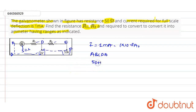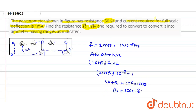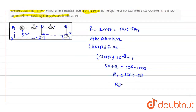Applying KVL in the first loop: (50 + R1) × i = 1. Substituting i = 10⁻³, we get (50 + R1) × 10⁻³ = 1, which gives 50 + R1 = 1000. Therefore, R1 = 1000 − 50 = 950 ohms.